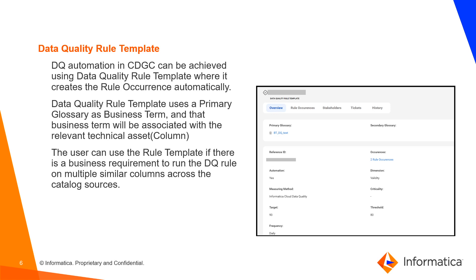Let's take an example. There is a column called account number, and this column is present across various catalog sources. There is a requirement to run a common DQ rule logic on the column account number. If you create rule occurrence, you need to create rule occurrence for all the columns manually. The recommended solution is rule template, because rule template creates rule occurrence automatically. The idea behind the rule template is it uses a primary glossary as a business term, and the business term will be associated with all relevant columns across the catalog source — so all columns called account number will be grouped under one business term entity.